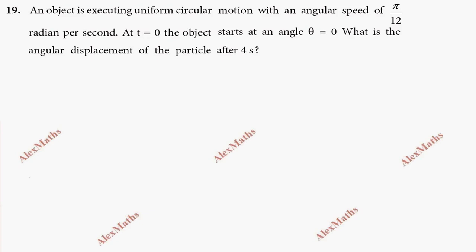Hi students, this is Alex here. The problem: An object is executing uniform circular motion with an angular speed of π/12 radians per second. At t equals zero, the object starts at an angle theta equal to zero. What is the angular displacement after four seconds? So let's use the diagram method now for uniform circular motion.